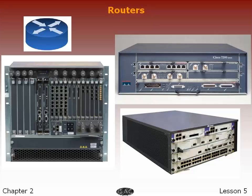A subscriber edge router, also called the customer edge router, is located at the edge of the subscriber's network. It also uses eBGP protocol with its provider's autonomous system and is typically used in an enterprise organization. Another type is the inter-provider border router, which interconnects ISPs and is a BGP protocol router that maintains BGP sessions with other BGP protocol routers in ISP autonomous systems.